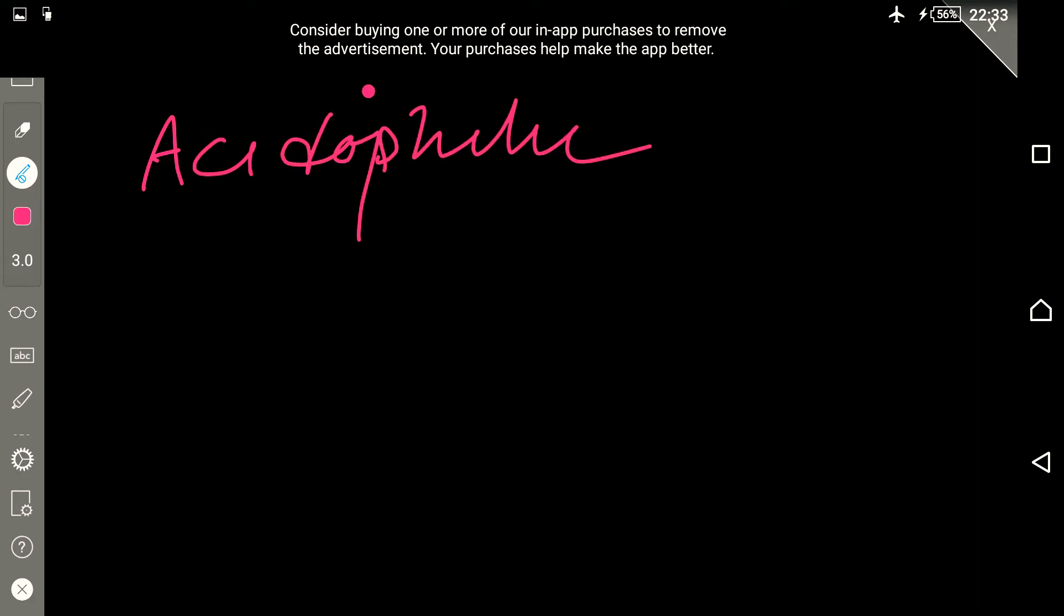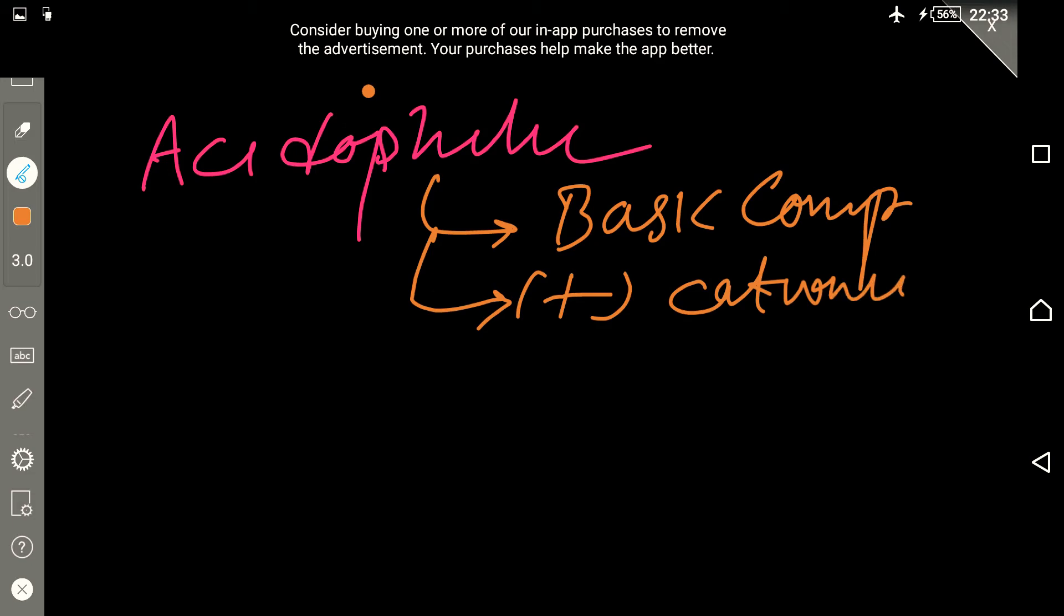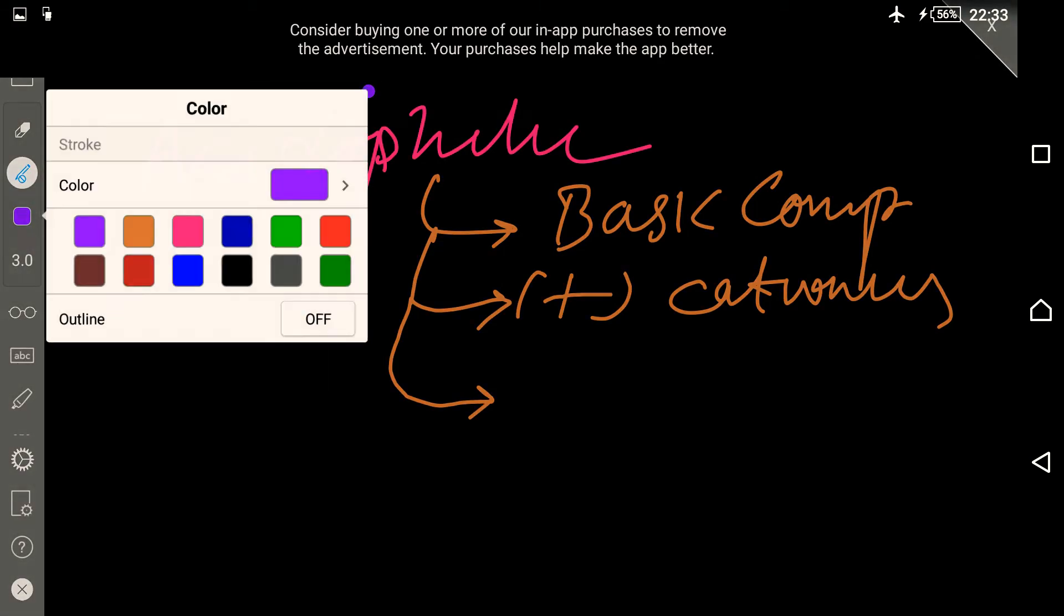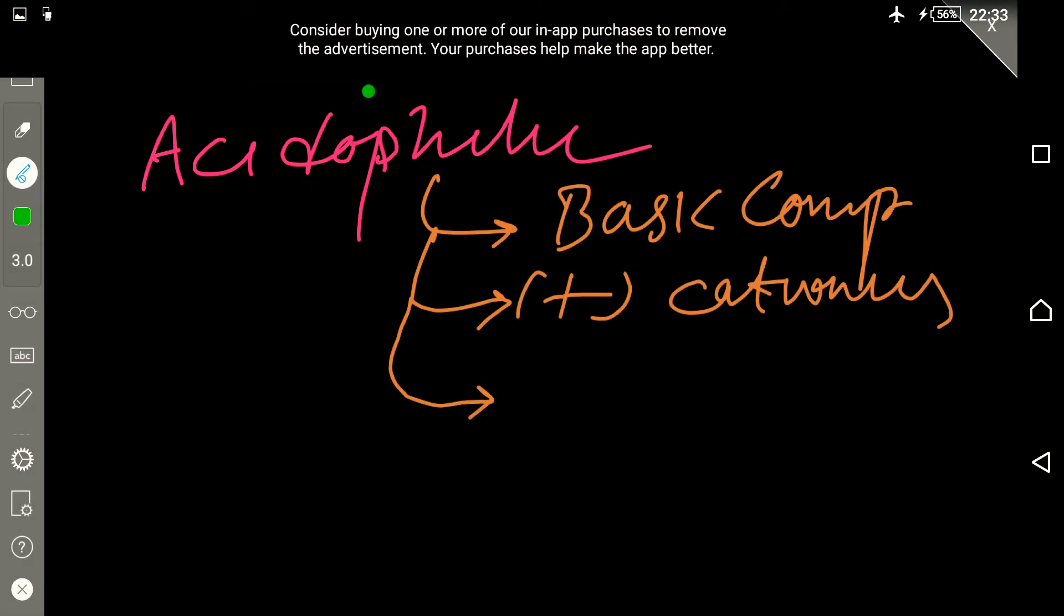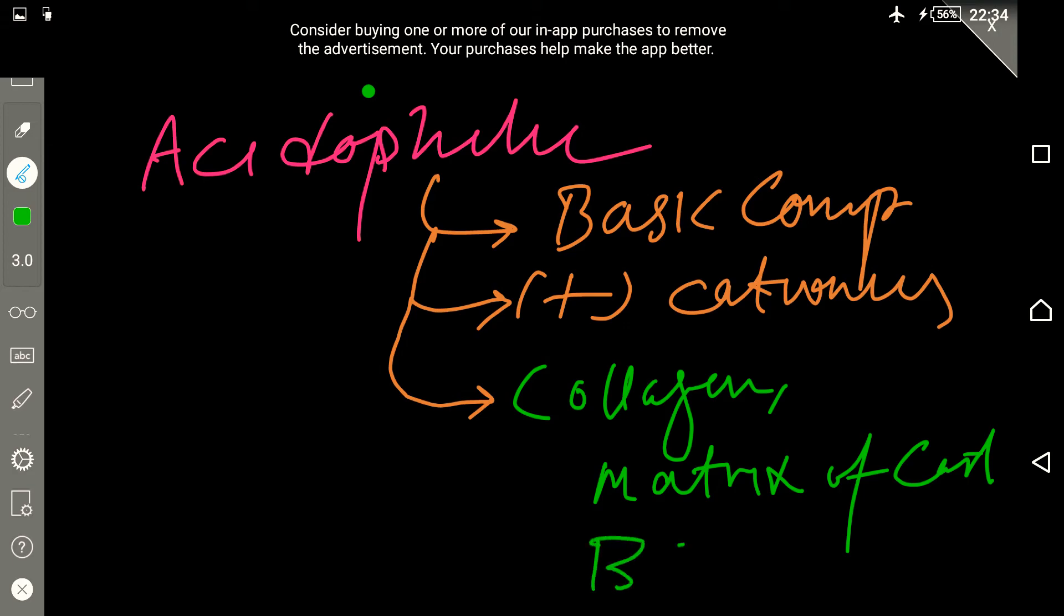For the acidophilics, we have basic compounds. Acidophilics like to bind with basic compounds. They like positive charges or cationics. The specific types or structures that take these colors are collagen, the matrix of cartilage, and any other structure that doesn't take the dye of basophilics.